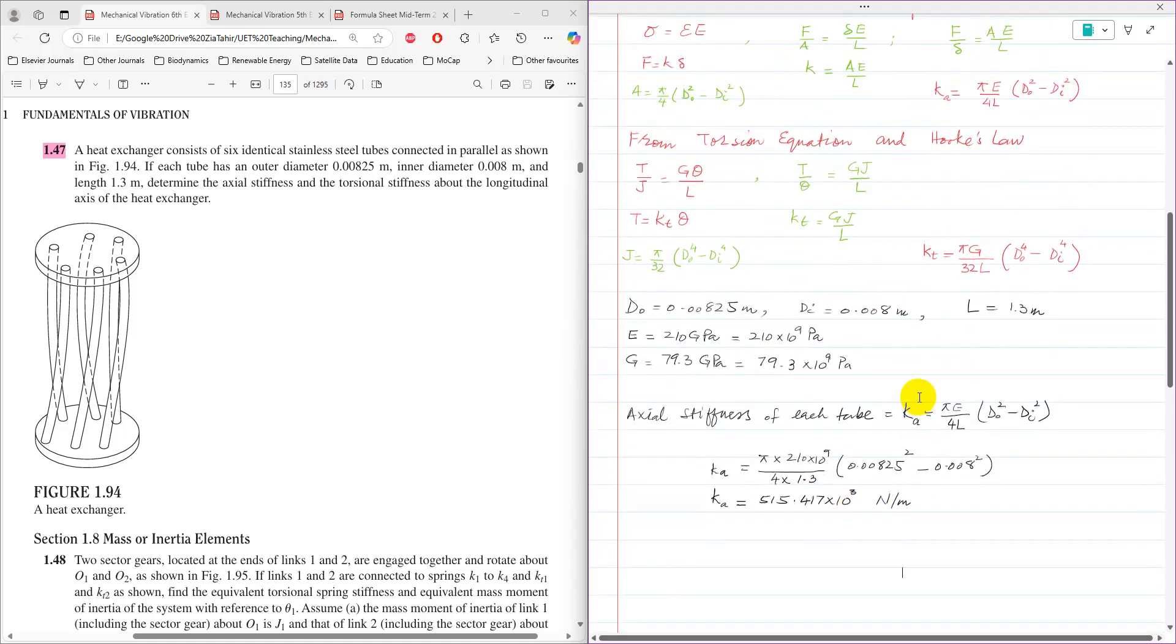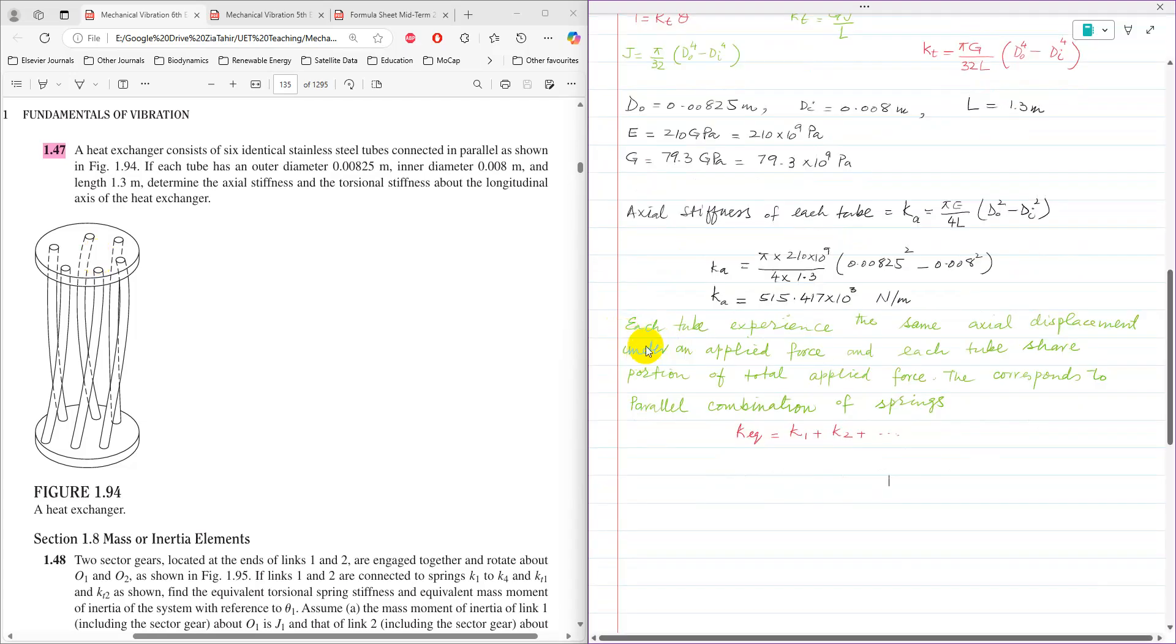Now we need to know how these tubes are connected. The tubes are connected in a way that if axial load is being applied onto the tube, each tube will have same axial deformation or axial displacement and the total load is shared by each tube. This type of configuration corresponds to parallel combination of springs. That is what I have explained here.